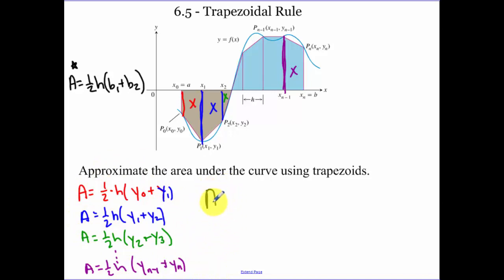What's common in each one of those areas? We have an h over a 2. Now let's look at what we have. We only have one y sub 0. We have two y sub 1's, two y sub 2's, two y sub 3's, two y sub 4's. We double up on all of our bases until we get to our last one.